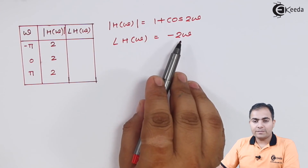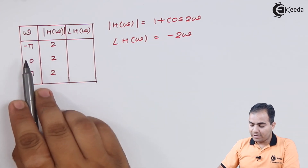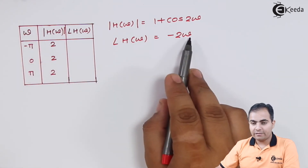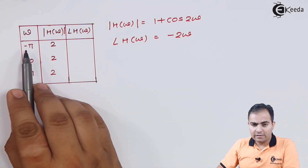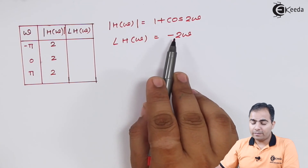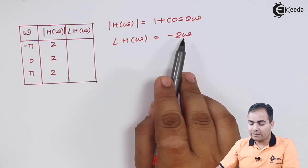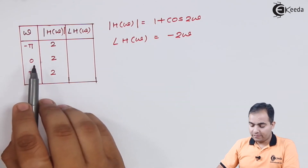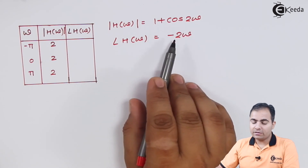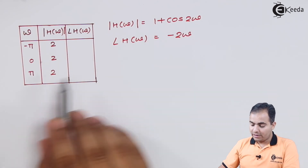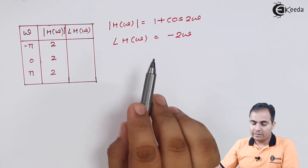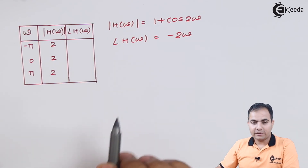Now I will substitute ω = −π, 0, and π into the phase response −2ω. For ω = −π: −2(−π) = +2π. For ω = 0: −2(0) = 0. For ω = π: −2(π) = −2π. So the phase response values are +2π, 0, and −2π respectively.